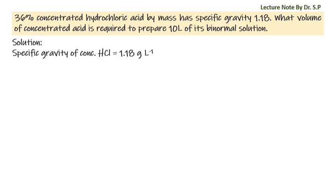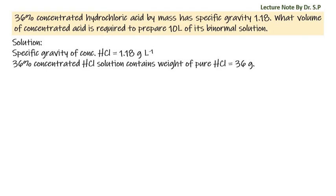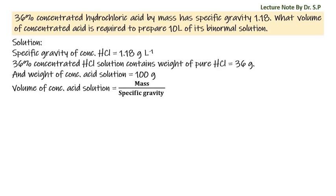The specific gravity of concentrated hydrochloric acid is 1.18 grams per mL. A 36% concentrated hydrochloric acid solution contains 36 grams of pure HCl per 100 grams of solution. The volume of concentrated acid solution equals mass divided by specific gravity: 100 grams by 1.18 g/mL, which converting to liters gives 1 by 11.8 liters.